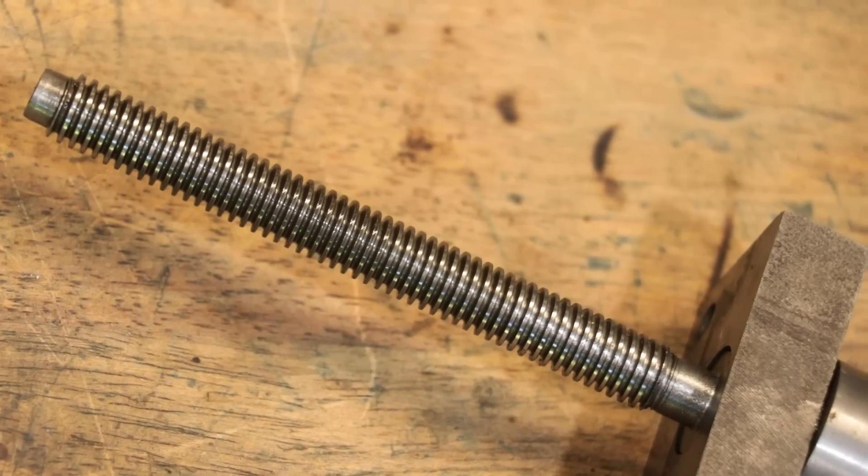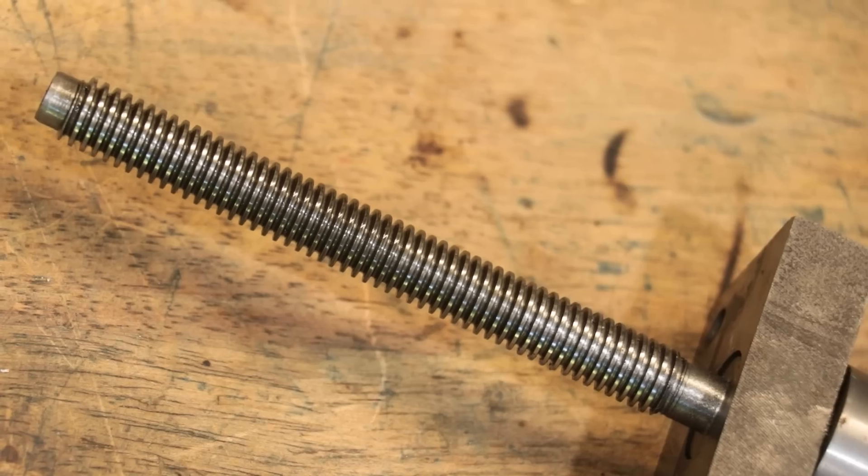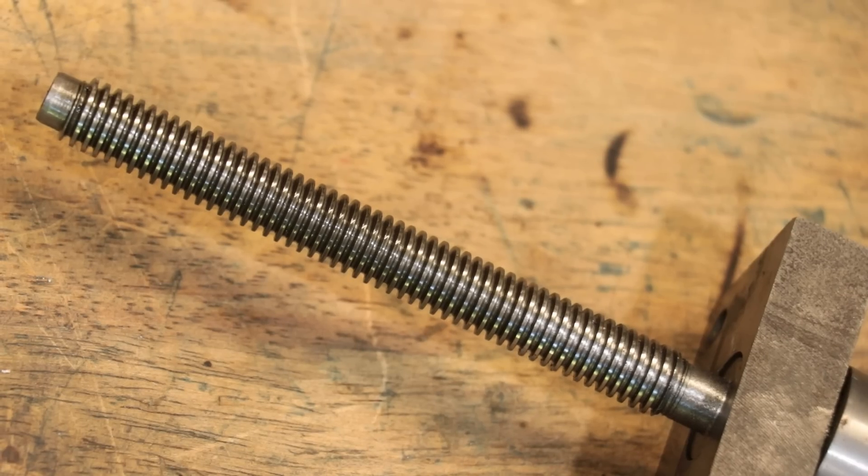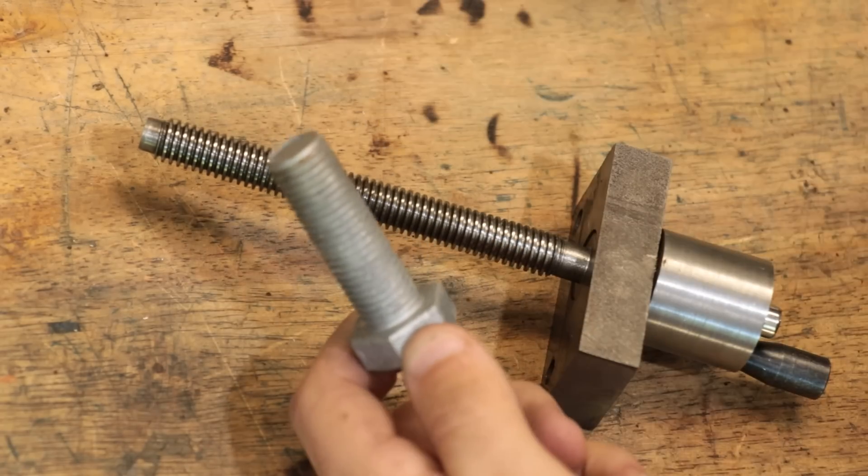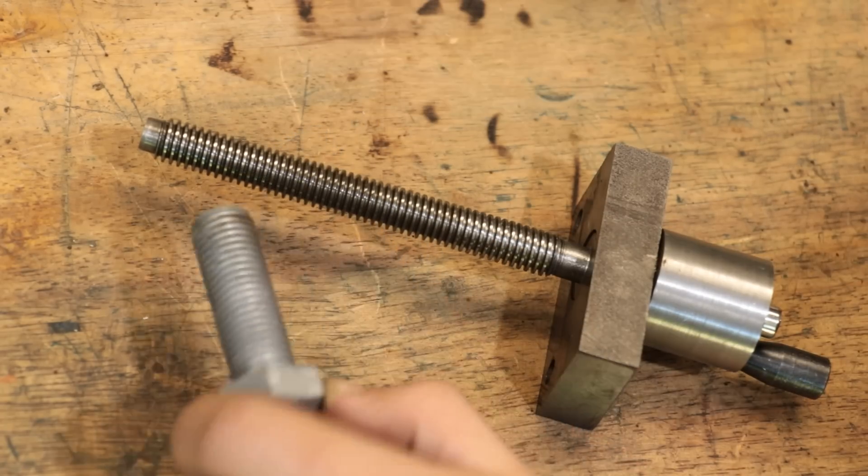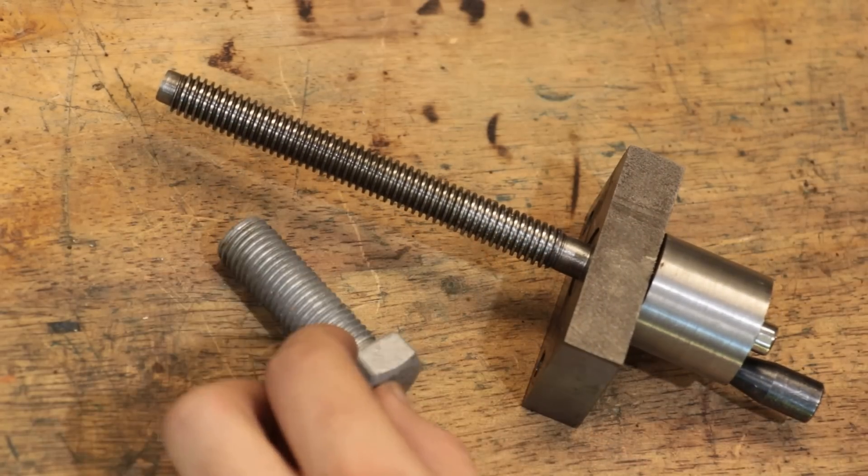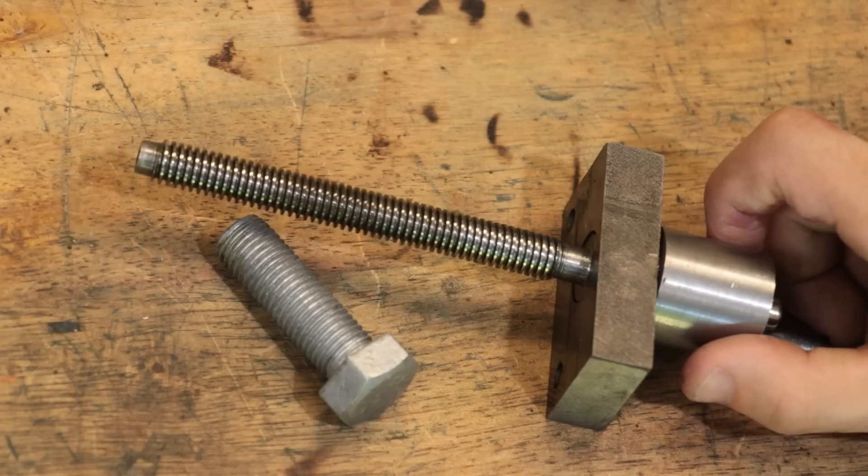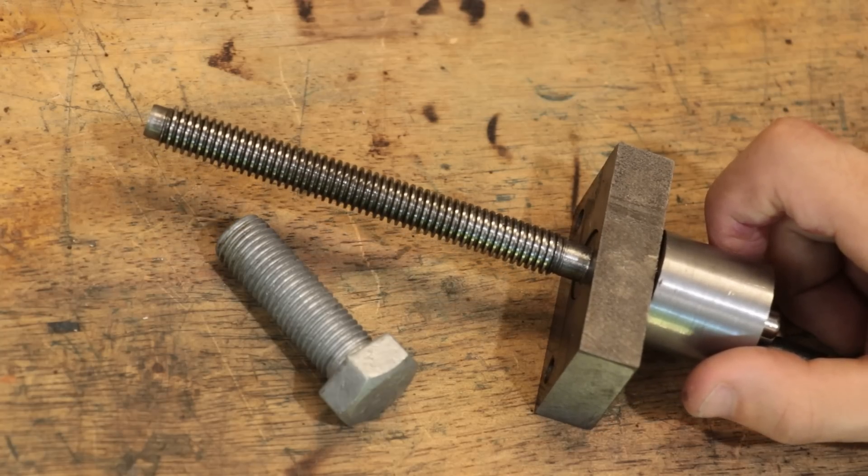Trapezoidal threads, unlike a regular V-thread which you'd find on a normal screw, use a 30 degree included angle, as opposed to the normal 60 or 55 degree which is what I normally cut. And the biggest difference is that it's just more efficient at transferring power than a normal screw.